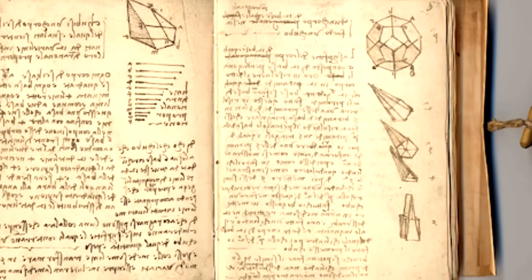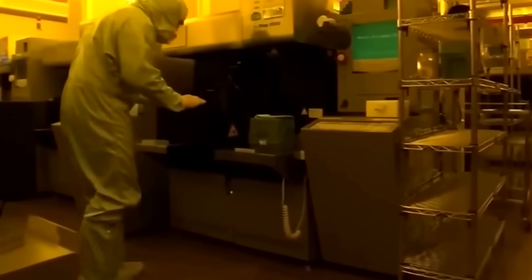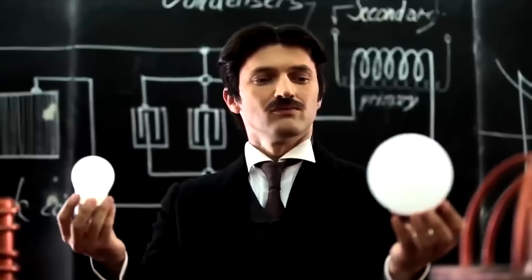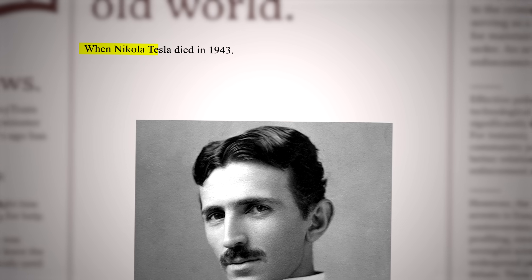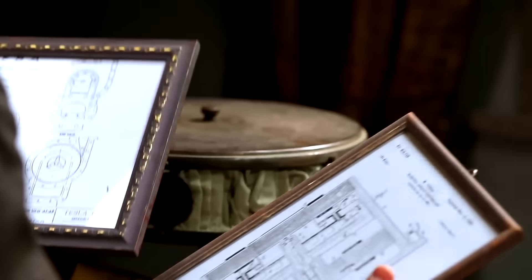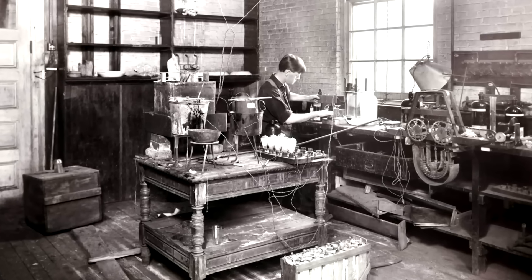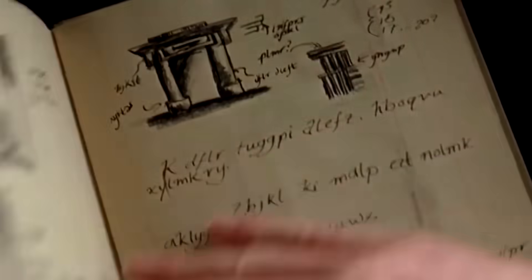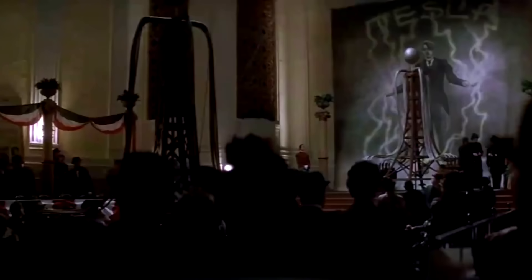In both cases, a promising technology with world-changing potential was developed, then promptly hidden away. In 1943, Tesla's papers could be physically locked in a vault. Today, digital information is harder to contain, which explains the extreme measures taken to erase all traces of the simulation. In the wake of the shutdown, the simulation files completely vanished. Researchers were required to sign extensive new non-disclosure agreements with severe penalties. But as with all secretive projects, whispers began to emerge.